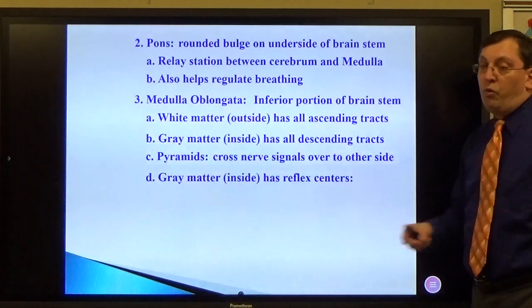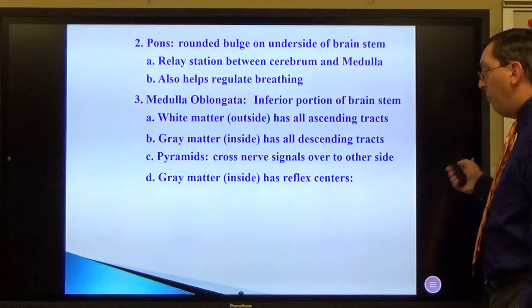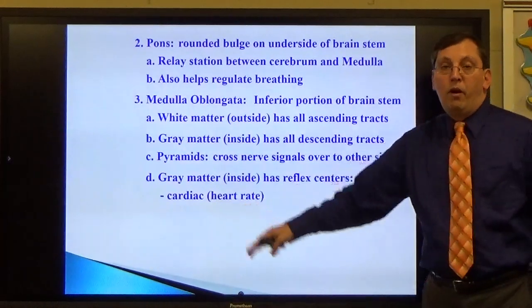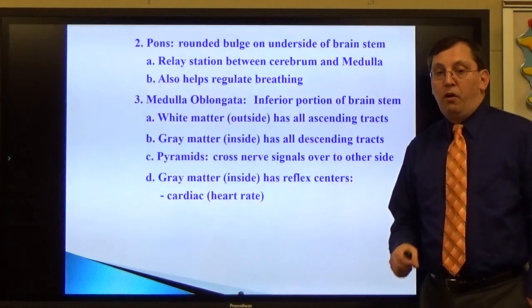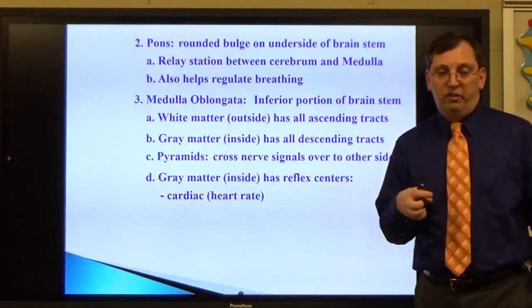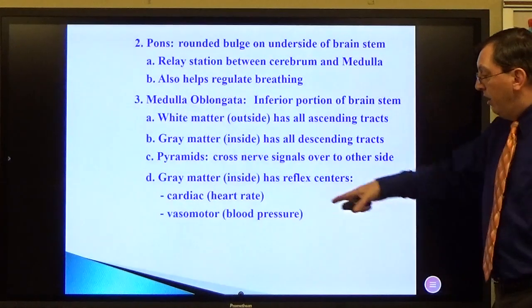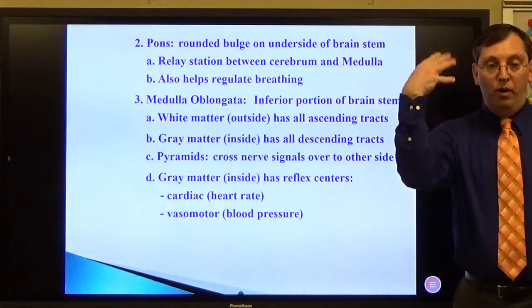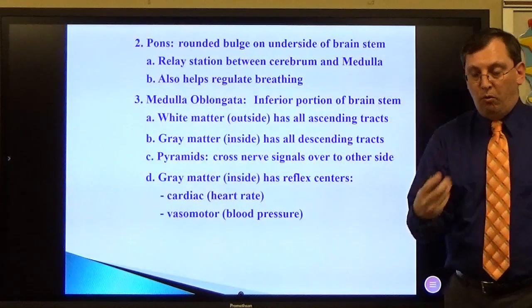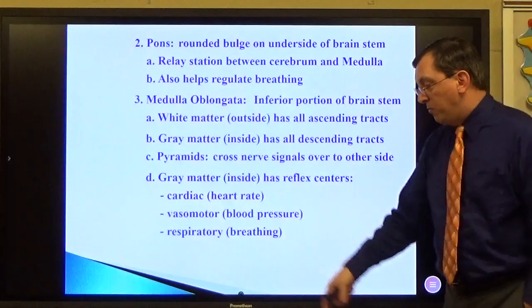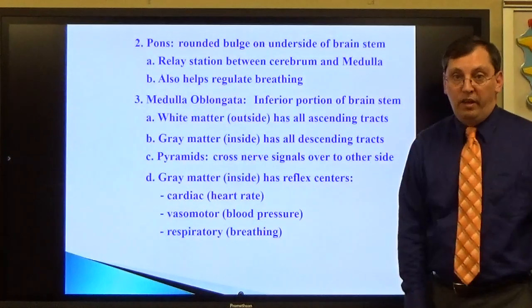The gray matter on the inside has reflex centers as well that allow me to do a number of different things, like control my heart rate. So my heart has an ability to adjust as a reflex to situations that are occurring. My blood pressure can react to situations without the brain thinking about it, without having a conscious control over it. Or respiratory again, so there's two parts for breathing here.